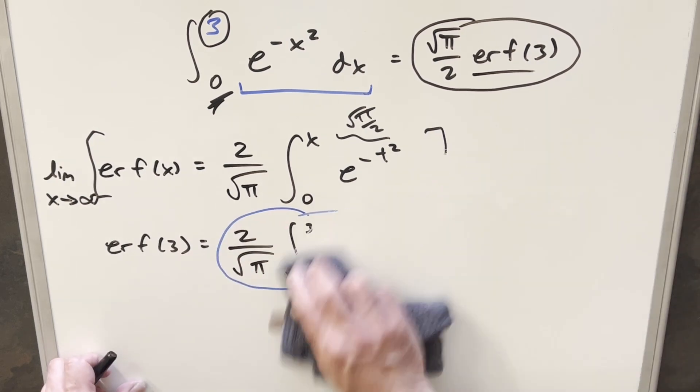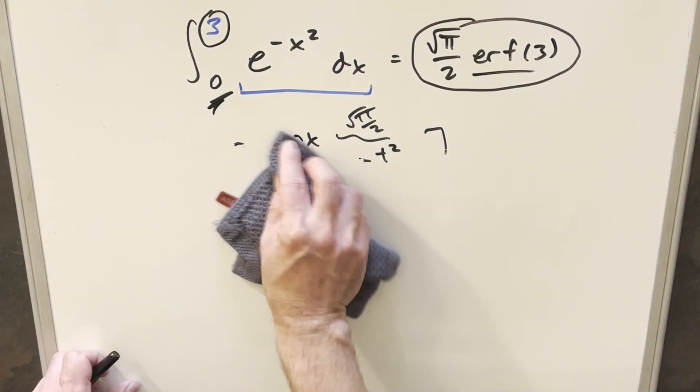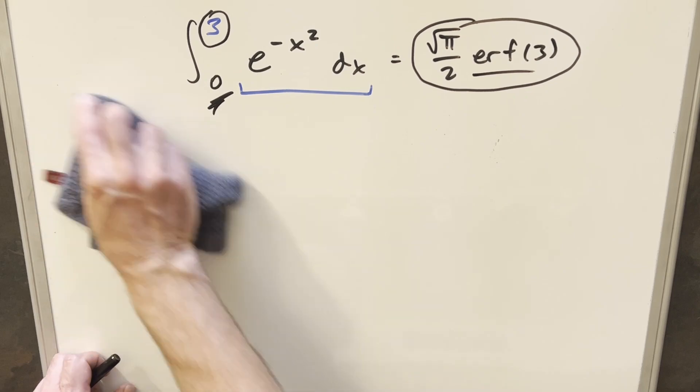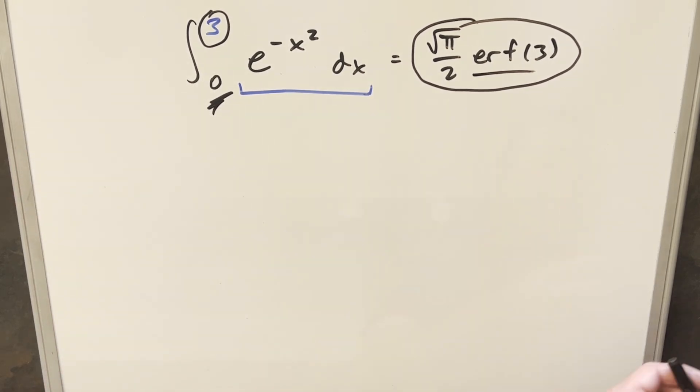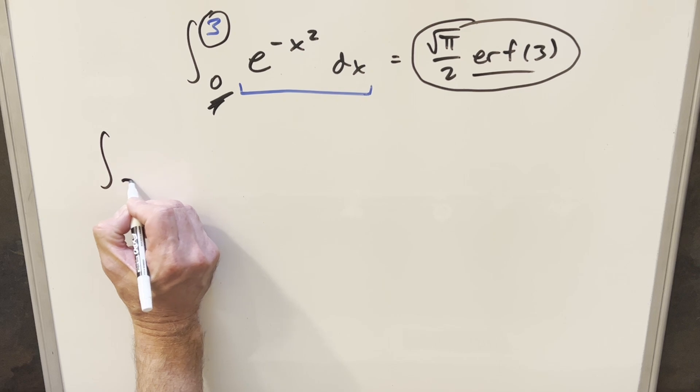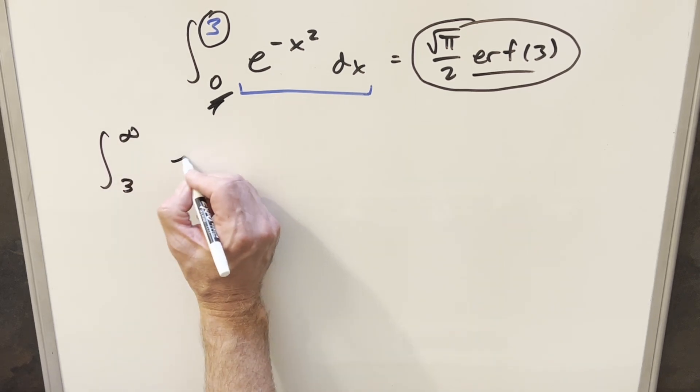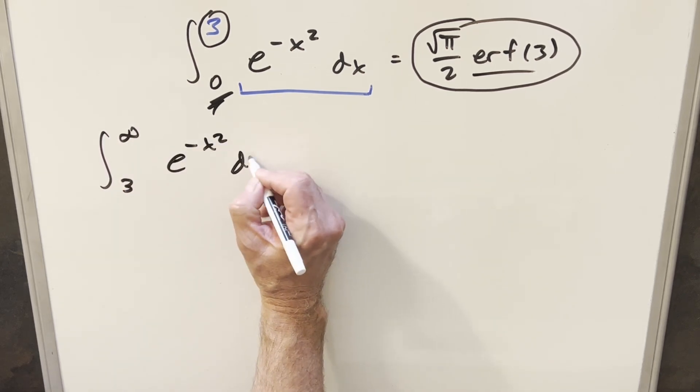Now, one other thing we can do to kind of make this a little, maybe get a little more insight on this, is we can look at a really similar integral. What we can do is start it at 3 and go to infinity of the same thing, e minus x squared dx.